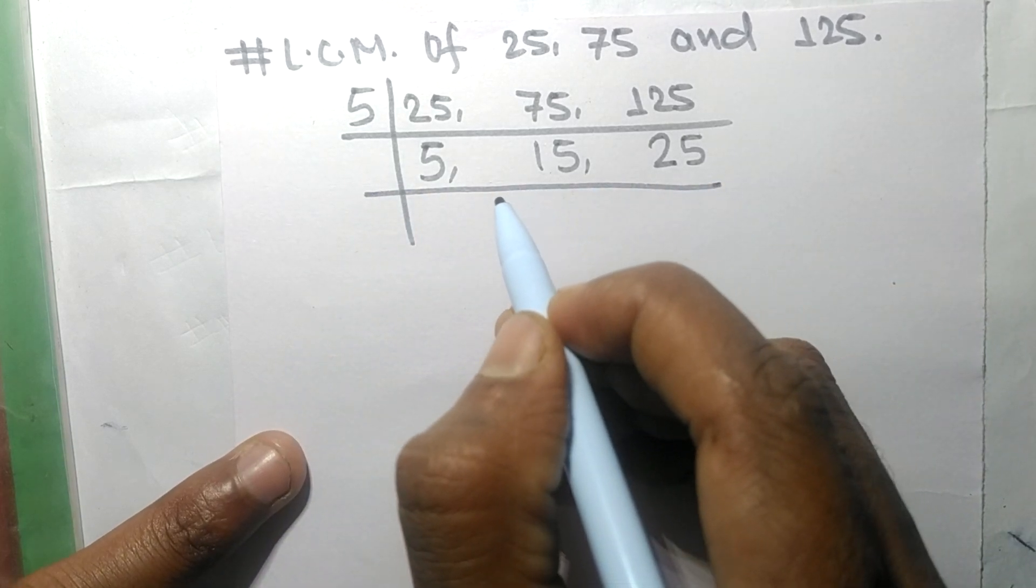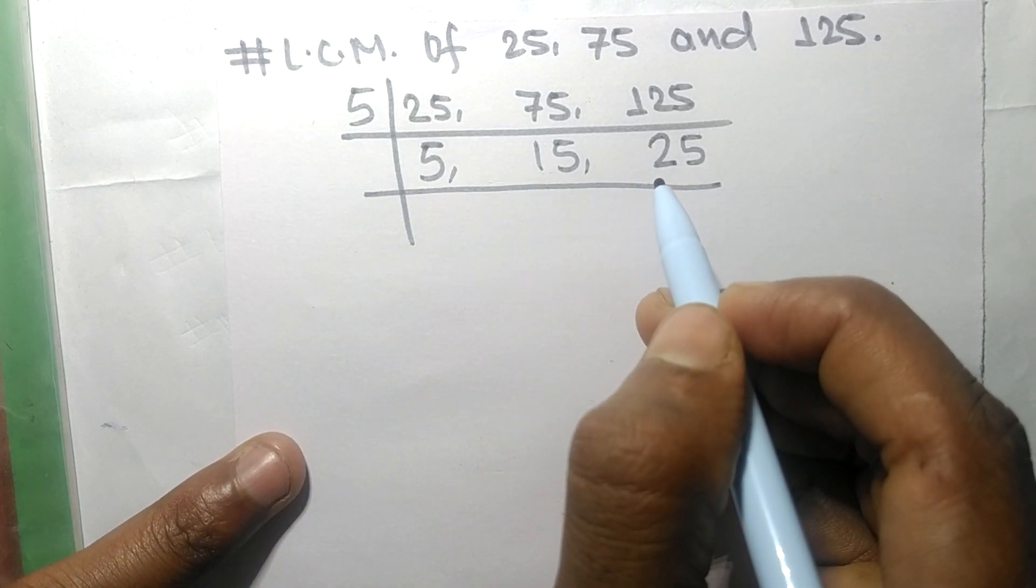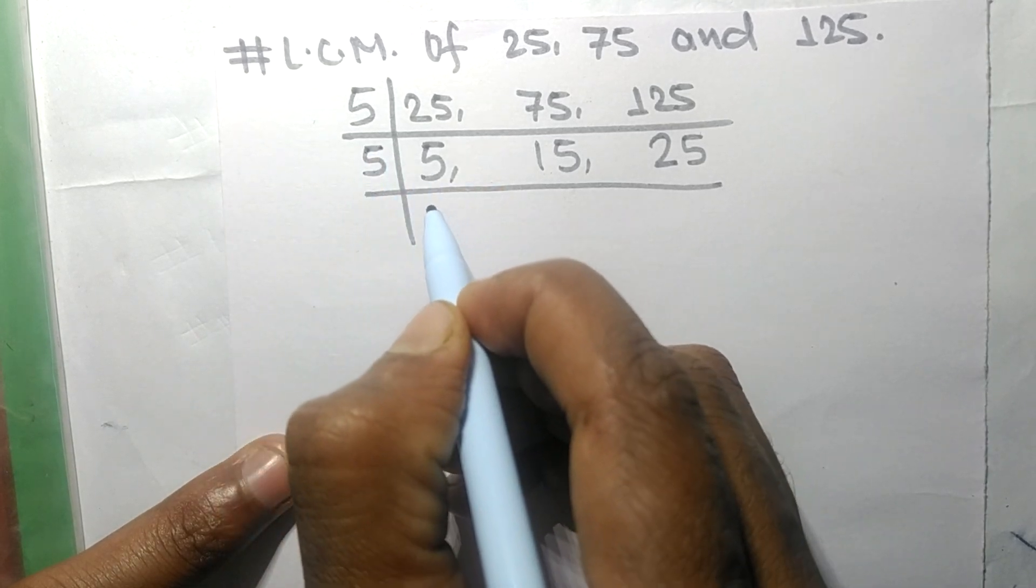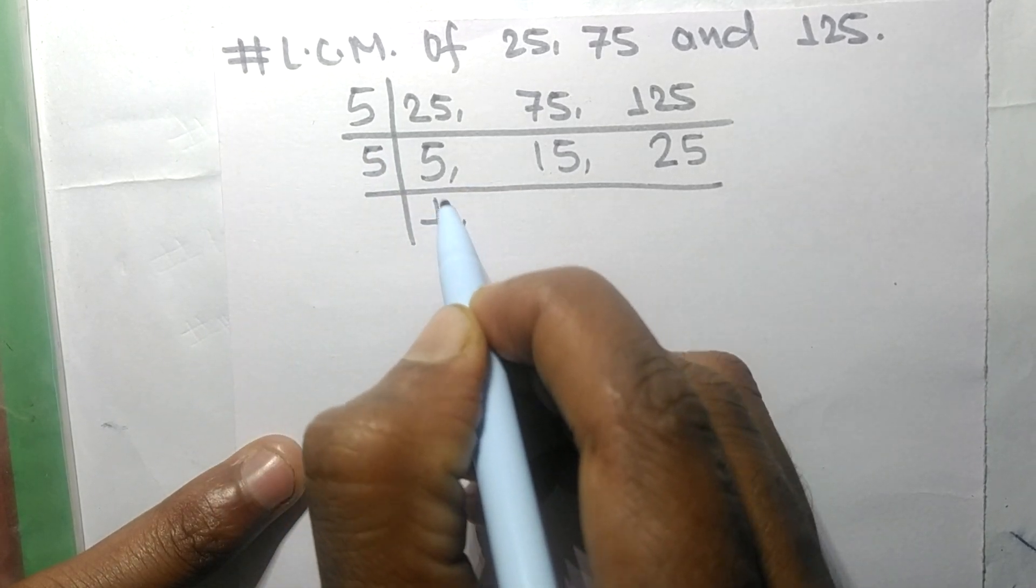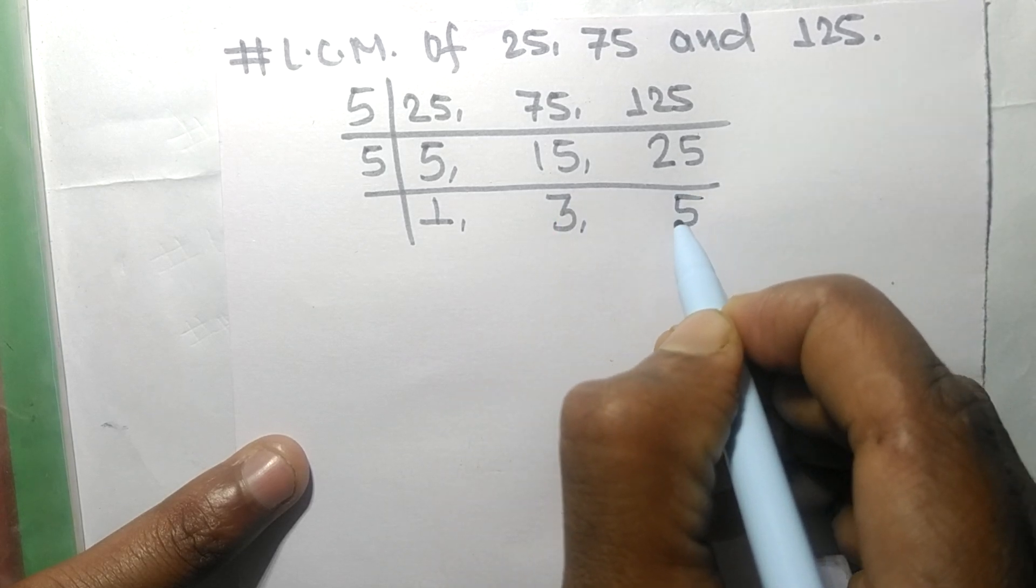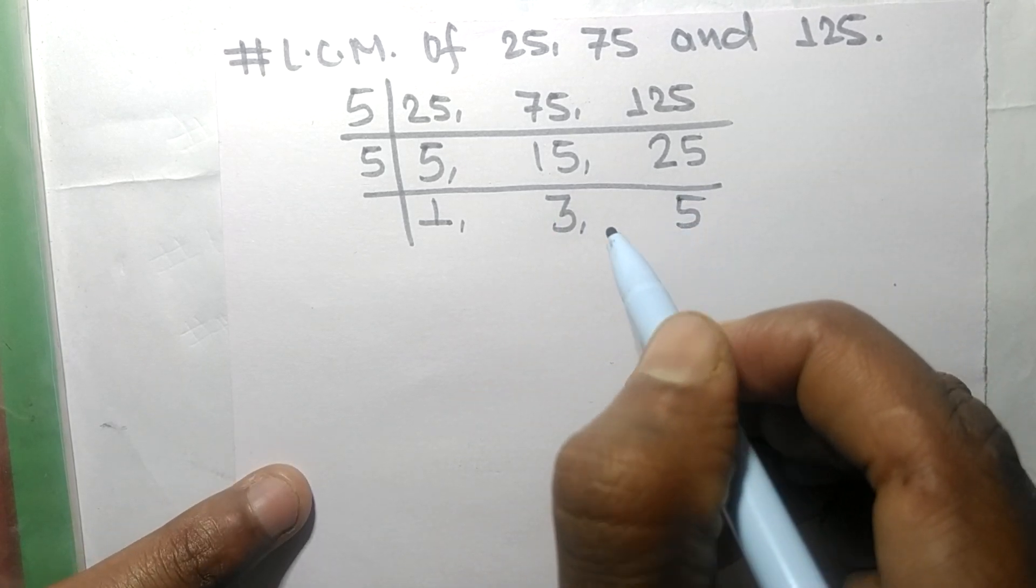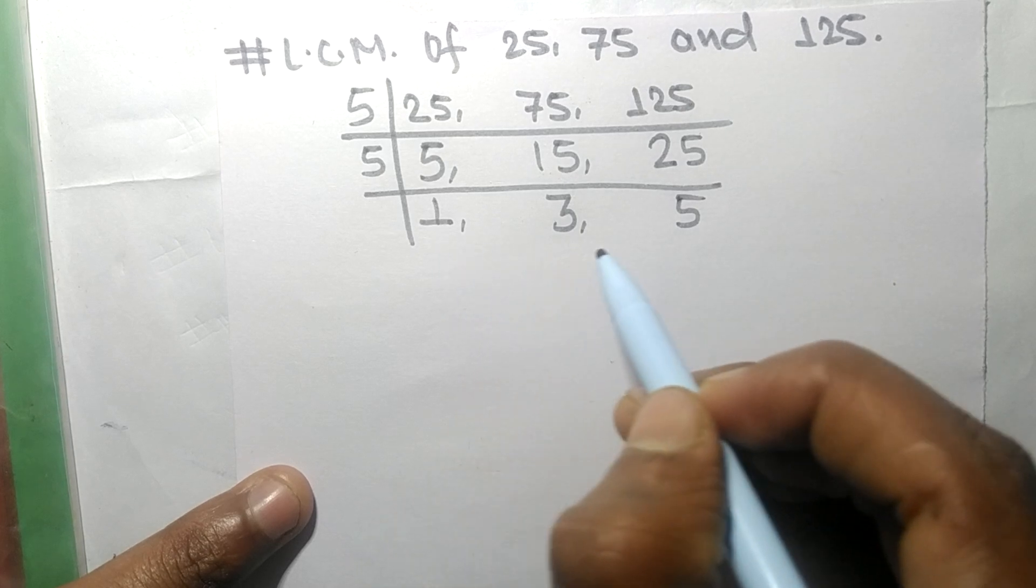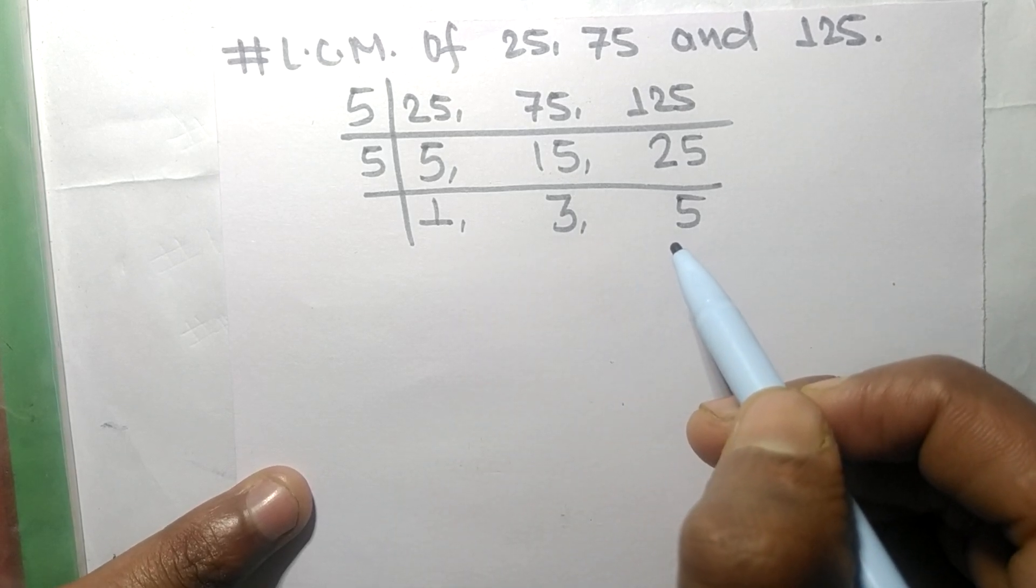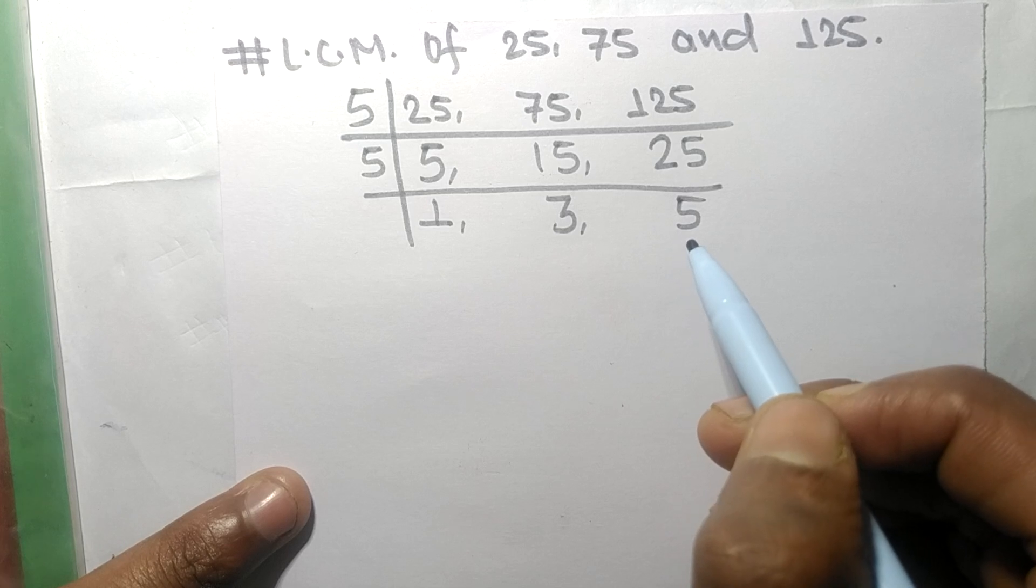Again, these all numbers are exactly divisible by 5. So 5 times 1 means 5, 5 times 3 means 15, 5 times 5 means 25. Now the numbers 1, 3, and 5 are not exactly divisible by the same number.